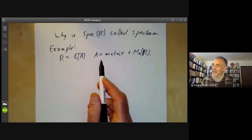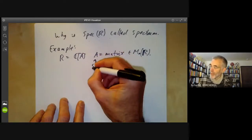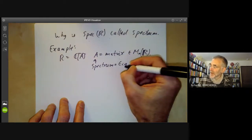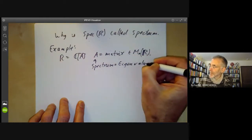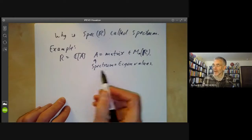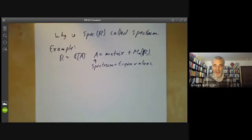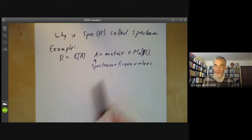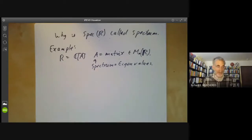A matrix has a spectrum, which is just a set of eigenvalues. The name 'spectrum' for the eigenvalues of a matrix came from quantum mechanics, where the spectrum of an atom has to do with the eigenvalues of a Hamiltonian operator. So the word spectrum in ring theory is related to this word spectrum in physics in a rather indirect way.